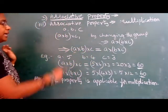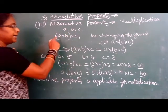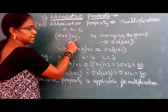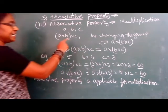That means if A, B, C are three numbers, A into B into C, here A, B as one group and C as one group.